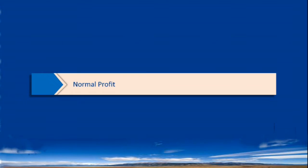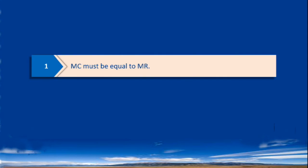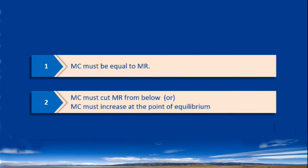The short run equilibrium conditions are the same. First, marginal cost must be equal to marginal revenue. Second, the marginal cost curve must cut the marginal revenue curve from below. Third, marginal cost must increase at the point of equilibrium.